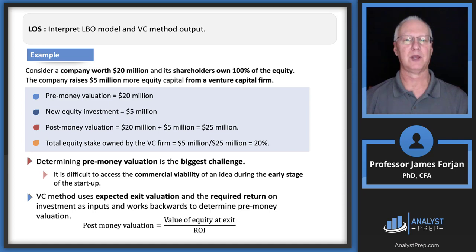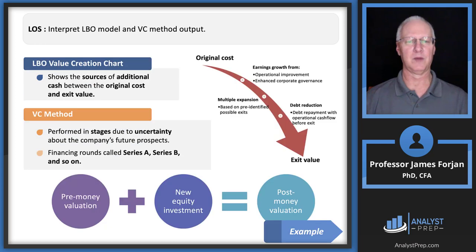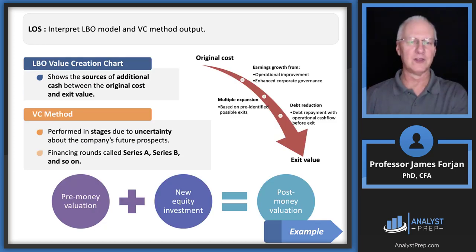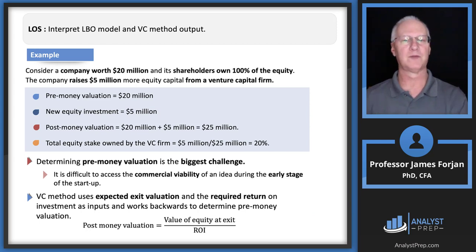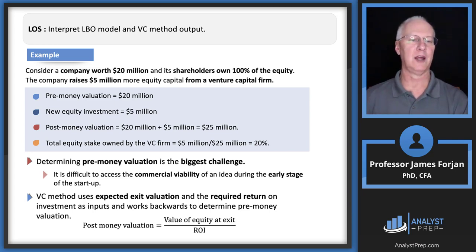A company raises $5 million from a venture capital firm. Pre-money is $20 million, new equity is $5 million, so post-money valuation is $25 million — you learned that in kindergarten: one apple plus another apple equals two apples. The venture capital firm's equity stake is 20% ($5M / $25M). The key challenge — determining pre-money valuation — is the biggest hurdle, as it relies on accurate information from the company.